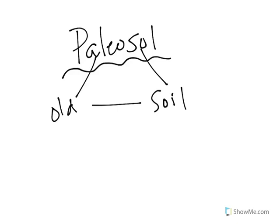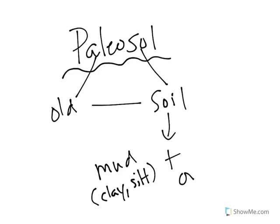Let's figure out how soil is made. Soil is a combination of mud — which we know is clay and silt — plus organics. But how do we make soil? We make it through erosion.